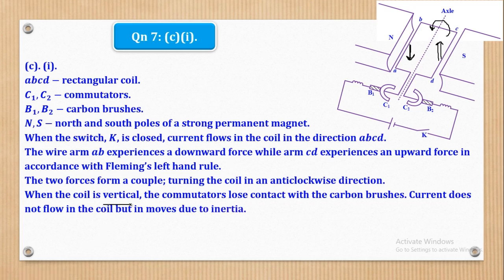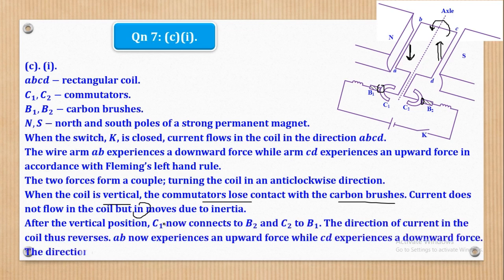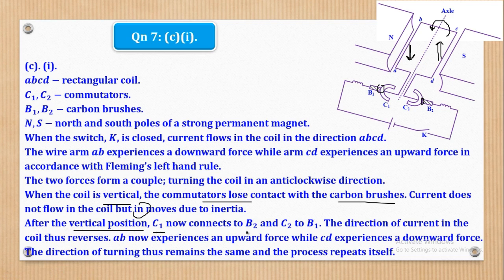So when the coil is vertical, the commutators lose contact with the carbon brushes. Current does not flow in the coil but it moves due to inertia. So this was supposed to be it. So when this coil is vertical, it means that there is no contact between the carbon brush and the commutators but the coil moves because of inertia. Then we shall say that after the vertical position, C1 now connects to B2 and C2 connects to B1. So after it means that now C1, remember as it rotates, it goes and it will now connect to B2. Similarly, C2 will move like that until it connects to B1.